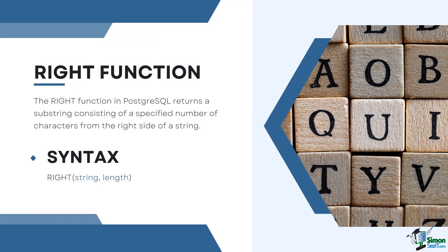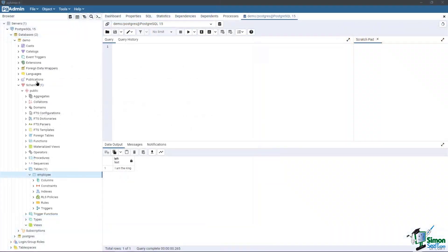The RIGHT function in PostgreSQL returns a substring consisting of a specified number of characters from the right side of the string. The syntax is: RIGHT(string, length). Here, string is the input string from which the substring is to be extracted, and length is an integer specifying the number of characters to be returned from the right side. Basically, the RIGHT function is just the opposite of the LEFT function.